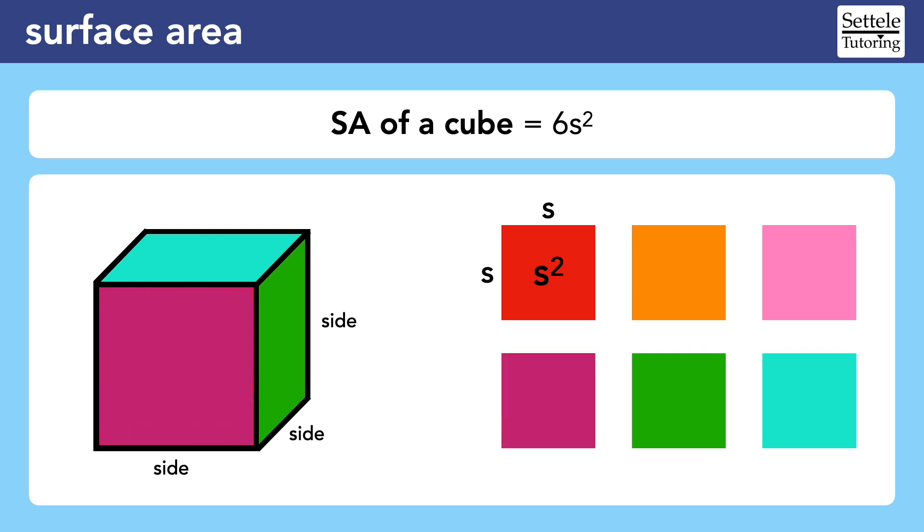Now it should be obvious where the formula comes from. There are six faces with the area of s squared, so 6s squared.